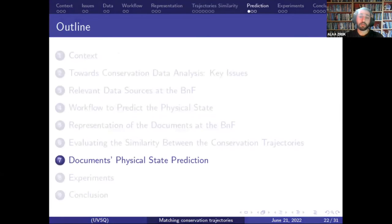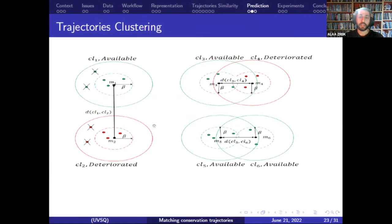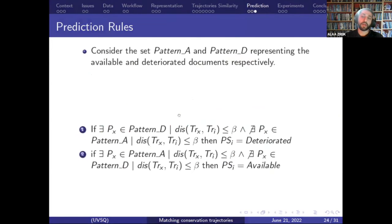For the prediction of the physical state, once the similarity is defined and the distance between trajectories is calculated, we selected the best clustering method for our data. The obtained clusters are filtered depending on their homogeneity, and for each class — available or out of order — we extract representative patterns. The prediction rules are based on these patterns. For example, a document having a trajectory similar to the patterns of the available class will be classified as available, and the same for the second class.